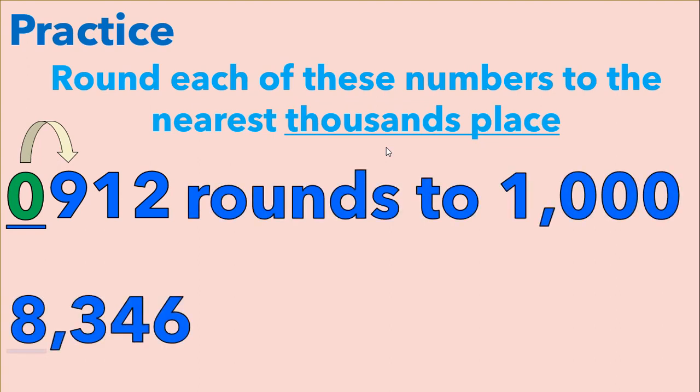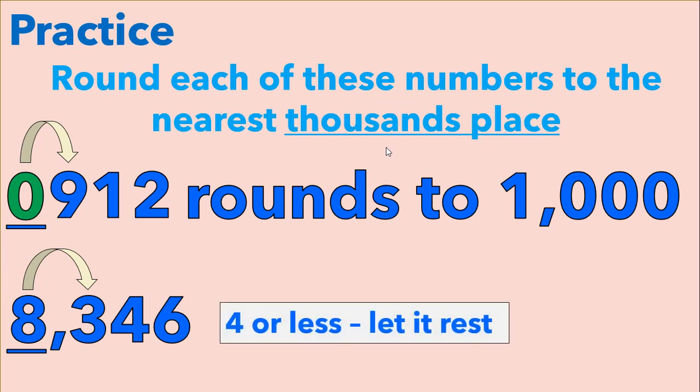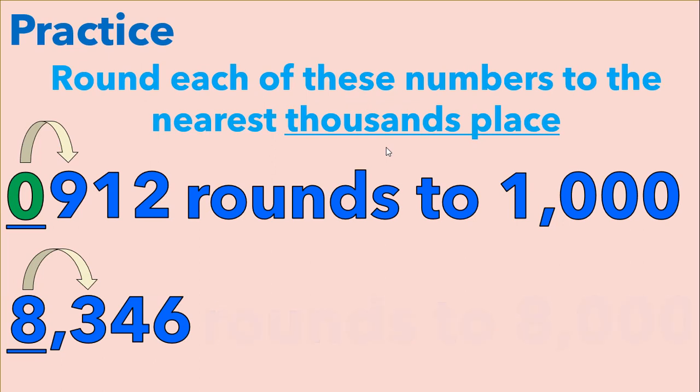Finally, we are going to look at the eight in the thousands place of eight thousand three hundred forty-six. We can see the digit next to it is three hundred, and we see the three falls in the category of four or less. So eight thousand three hundred forty-six is closer to eight thousand than it is to nine thousand.